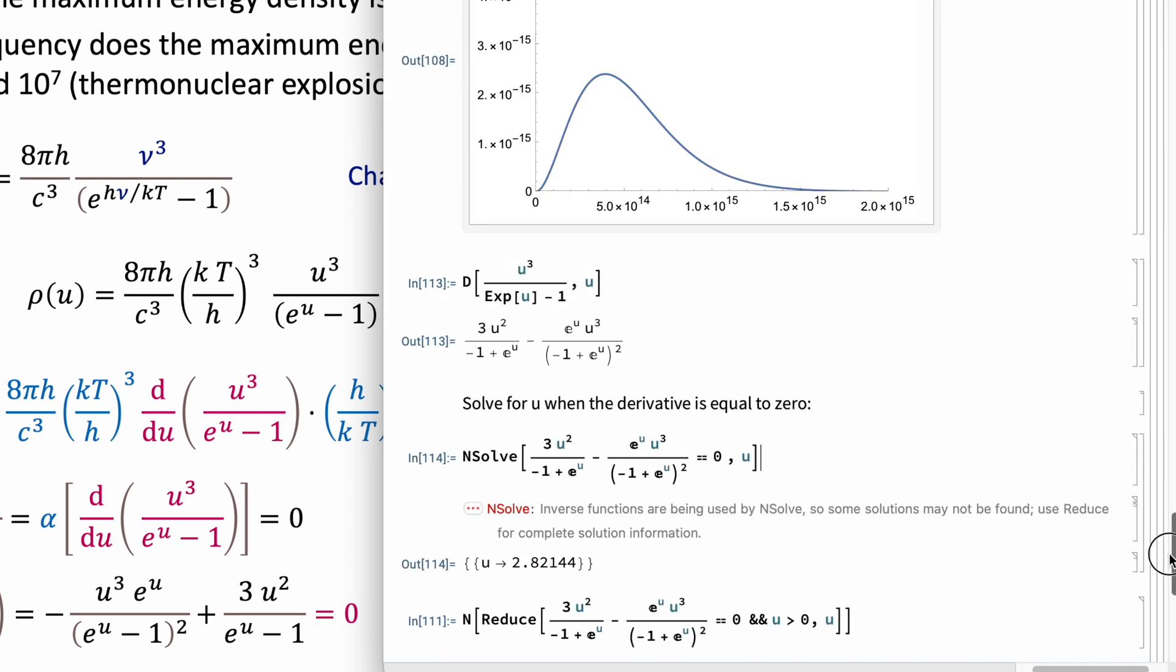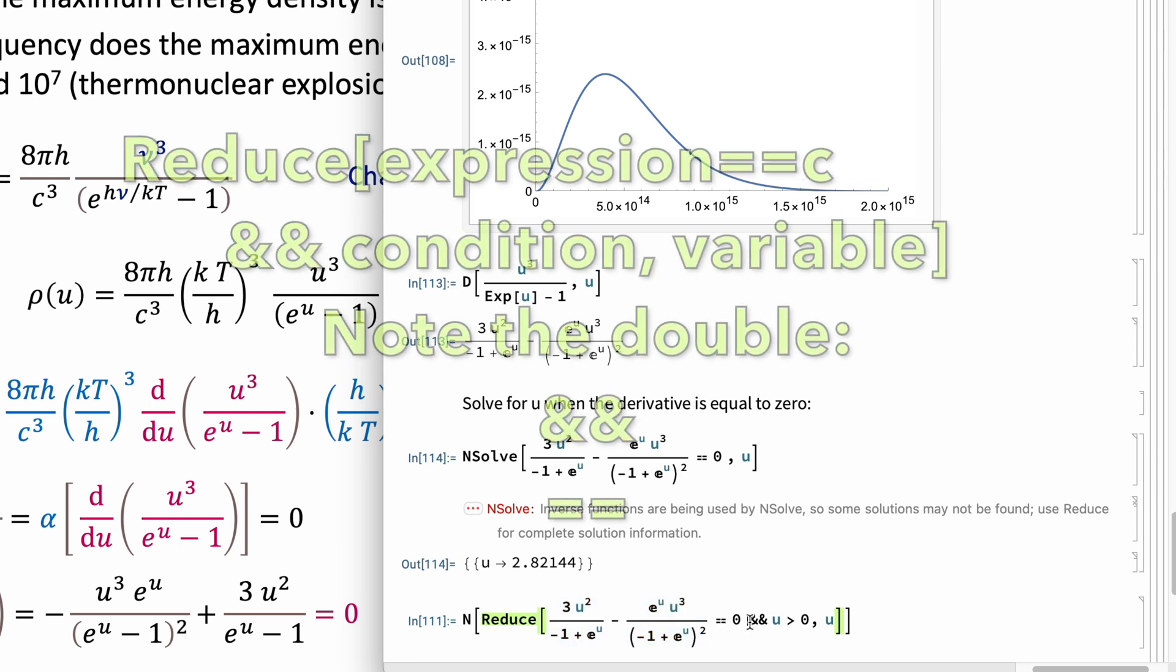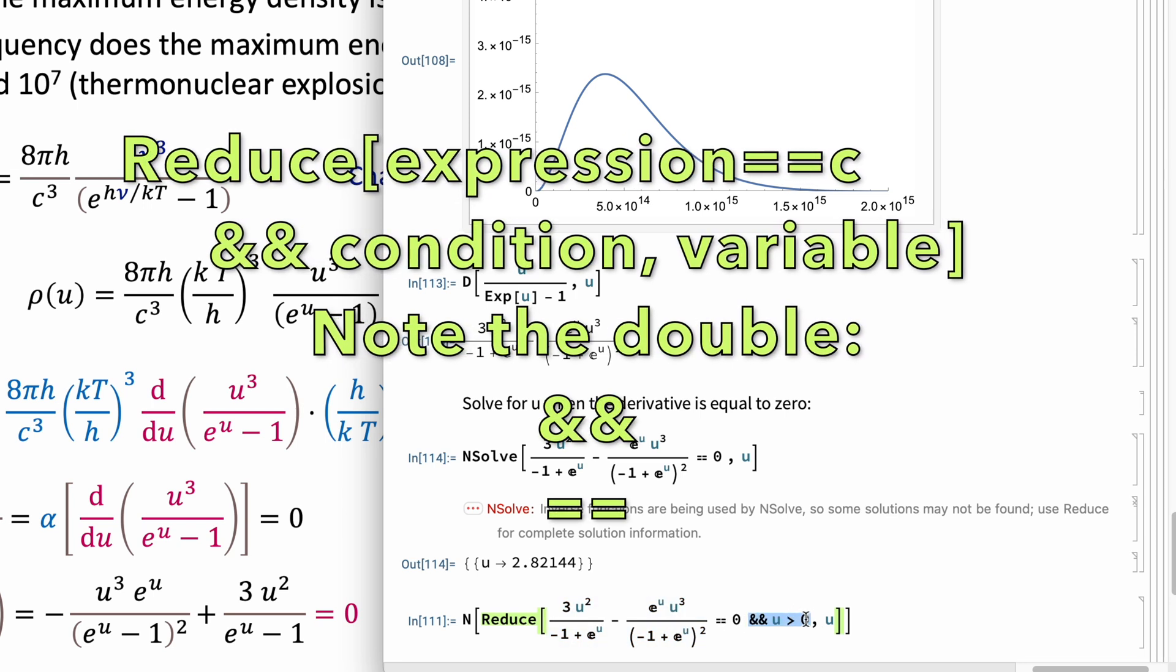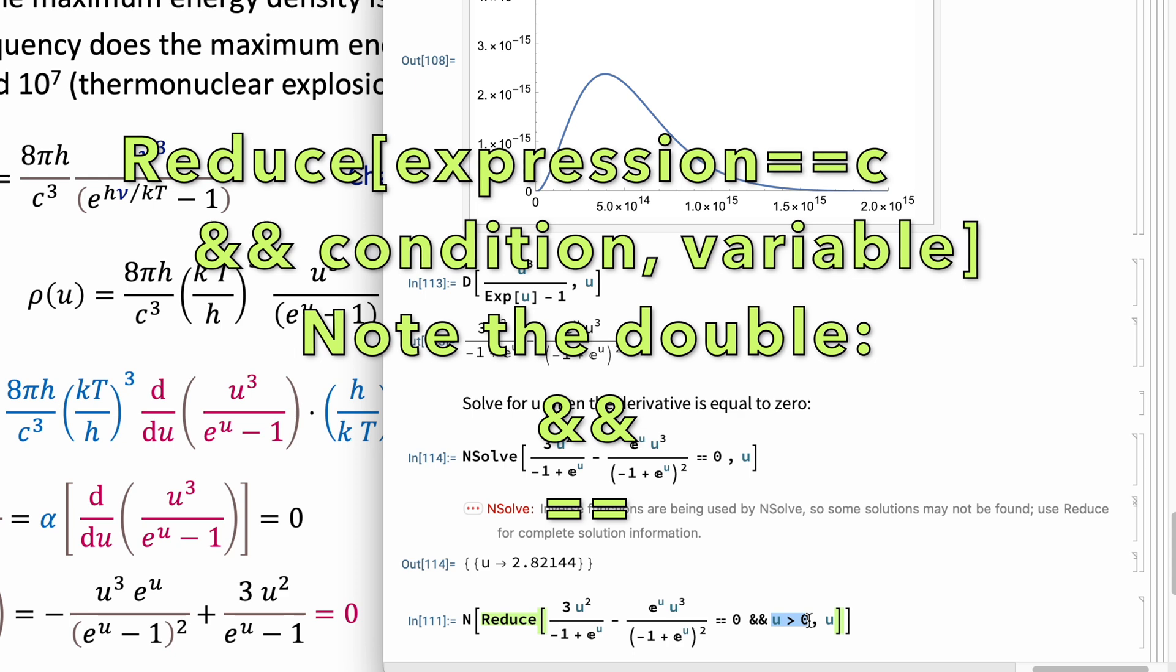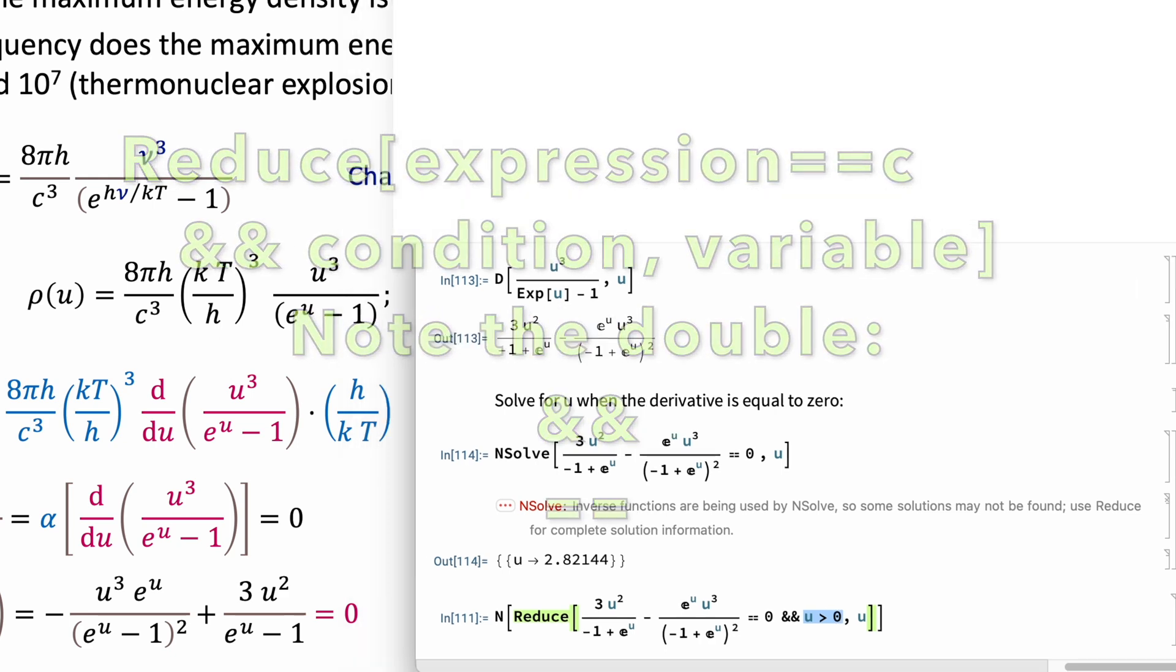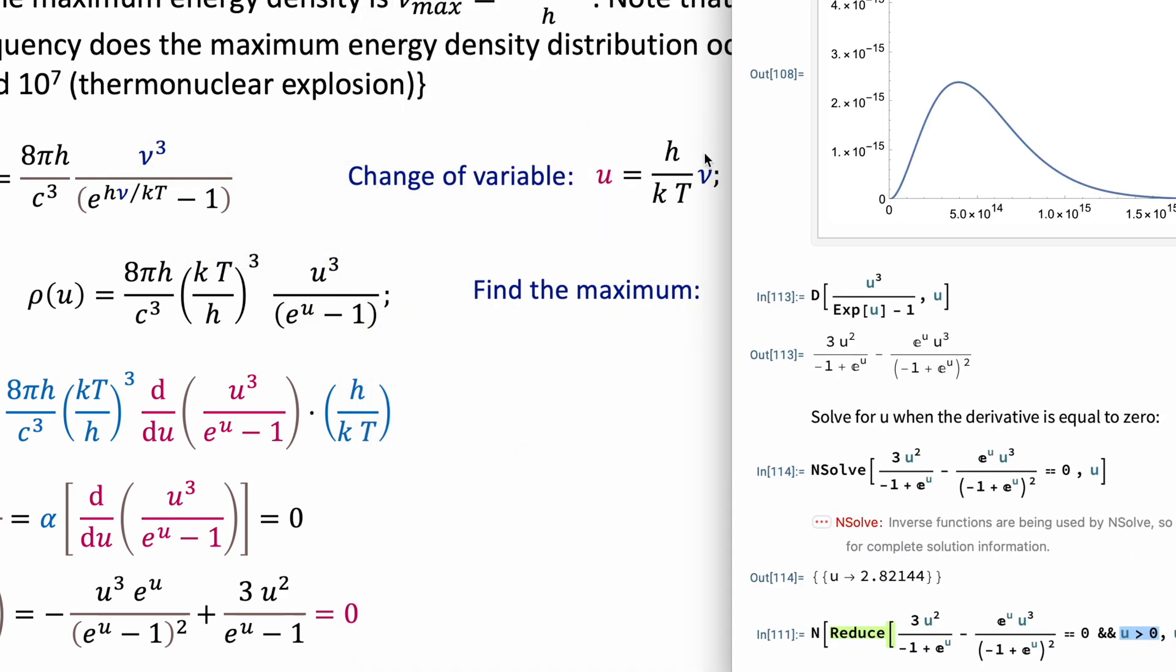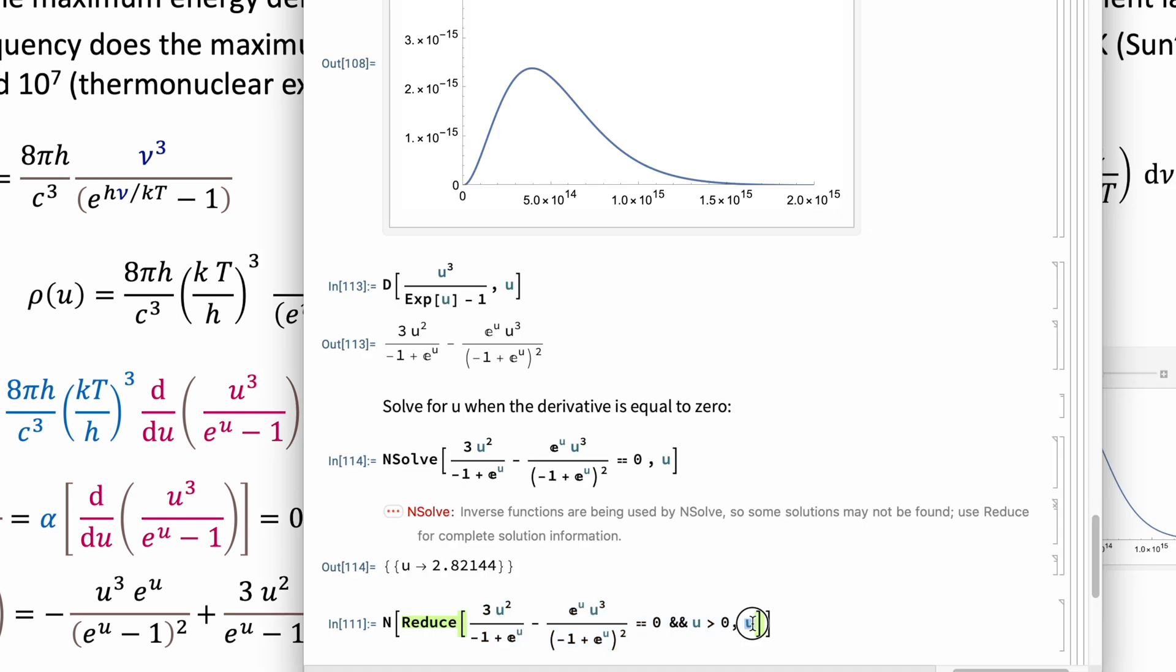Okay, but let's use that suggestion that Mathematica is telling me about using reduce. So I use the function reduce of my expression, which was the derivative equals zero, so equals equals zero, and I'm adding this other condition that u has to be positive. And from the definition of u, that should be clear that u must be positive. And I'm solving for u.